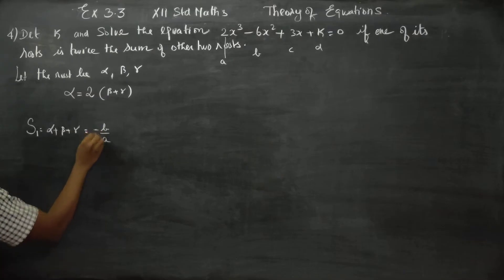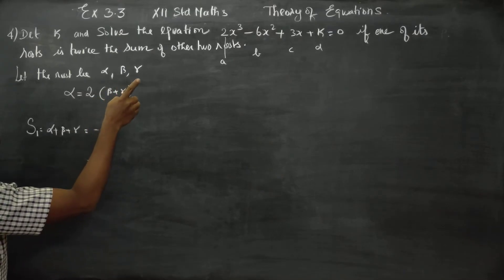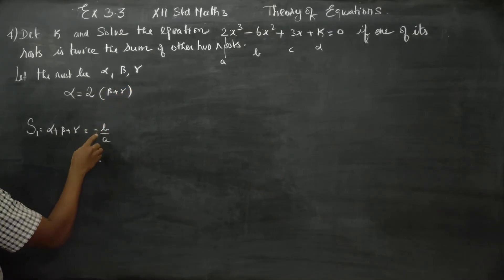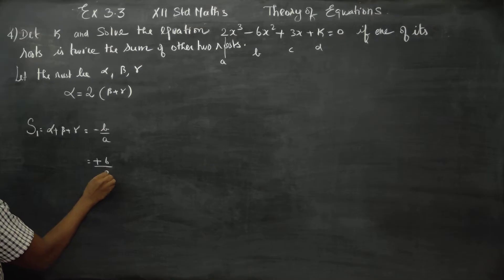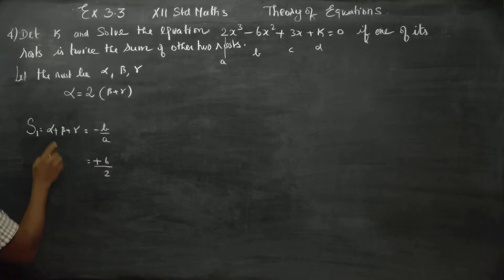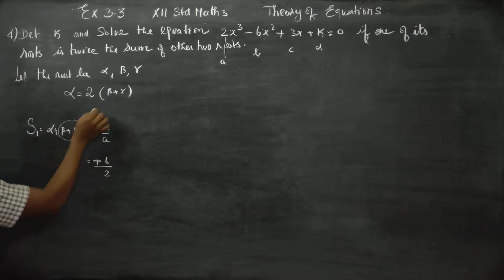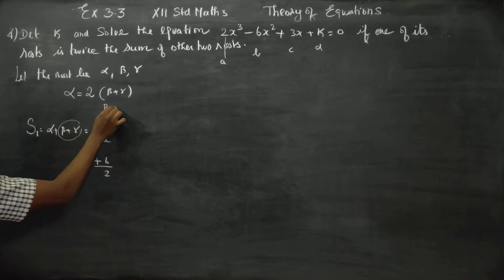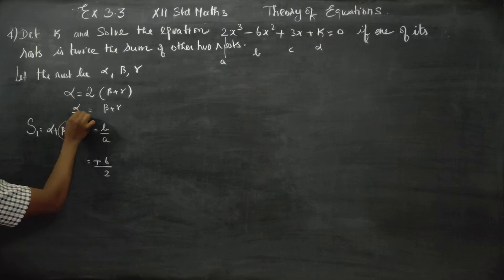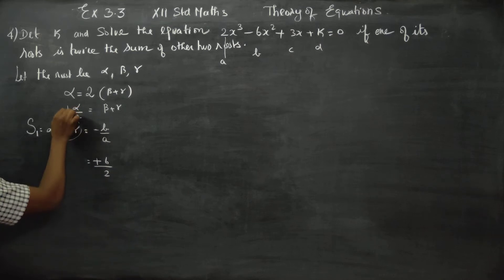Alpha plus beta plus gamma equals 3. Now I am going to use a small technique here. From the condition alpha = 2(beta + gamma), we get beta plus gamma equal to alpha by 2.